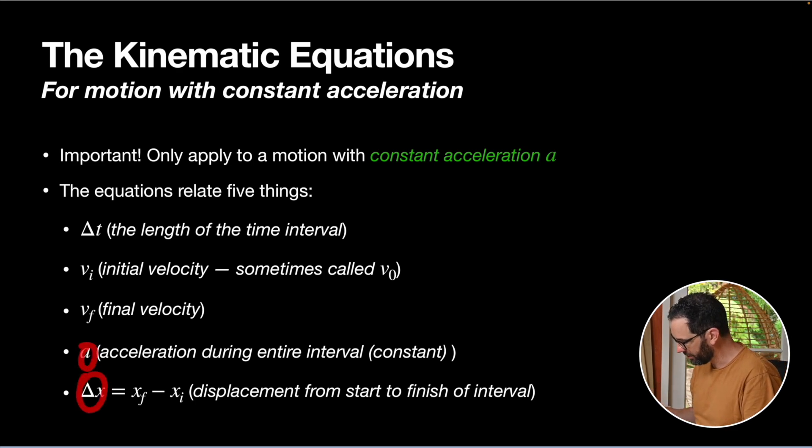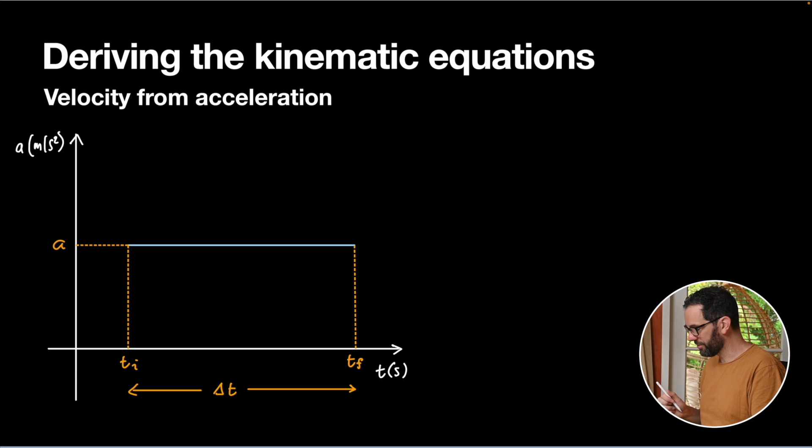So these five things can basically be related in a number of different equations that each use four of these quantities. I'm going to derive a couple of them just so you can get an idea of where they come from, and then we'll do some examples of the kinematic equations in a separate video. So first off, we've drawn here a graph of what our acceleration looks like versus time. Acceleration is constant, so it's just stuck at a particular number. And I've marked on my starting and finishing time points, which means I've got my change in time of Δt along this axis here.